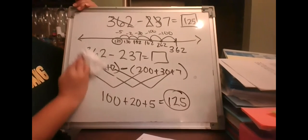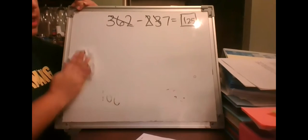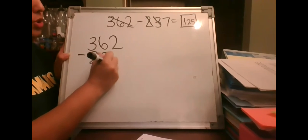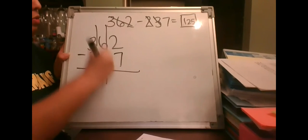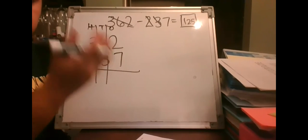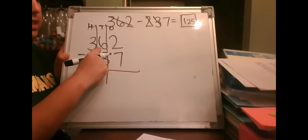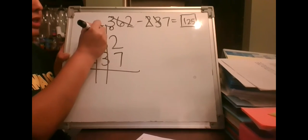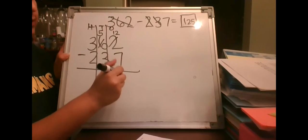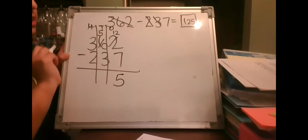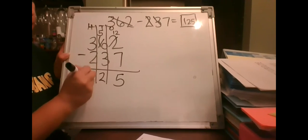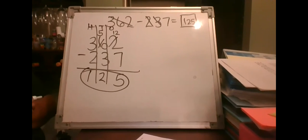Using the algorithm for 362 minus 237: in the ones place, 2 ones minus 7 ones — not enough, so we regroup. Borrow from the 6 tens: the 6 becomes 5 and the 2 becomes 12. 12 minus 7 is 5. Then 5 tens minus 3 tens is 2. Then 3 hundreds minus 2 hundreds is 1. The answer is 125.